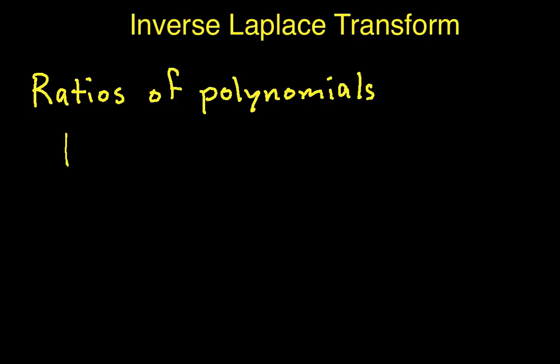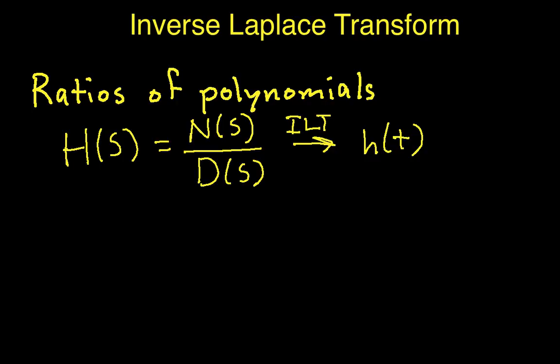So we're looking at something like this, where h of s is a ratio of a numerator polynomial over a denominator polynomial. And what we want to do is we want to find the inverse Laplace transform of h of s to get h of t. So that's our goal.